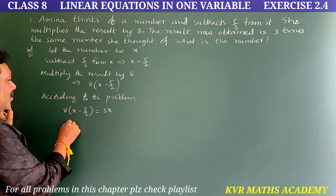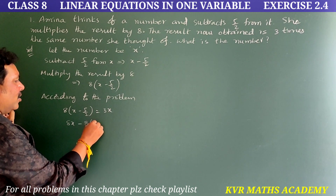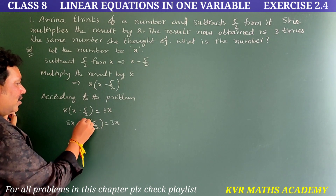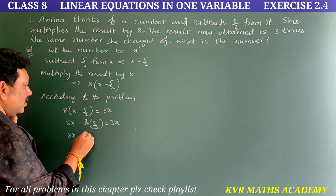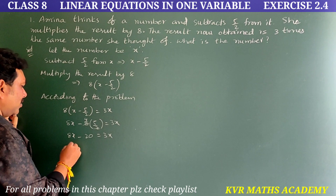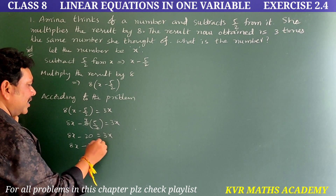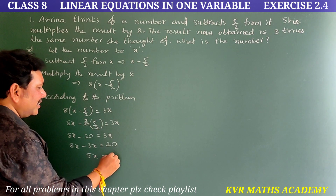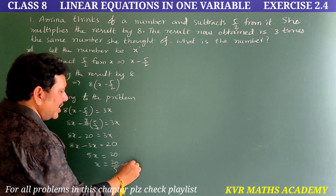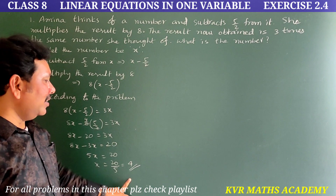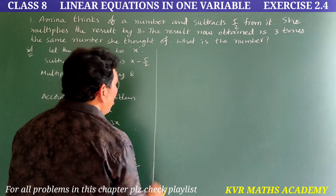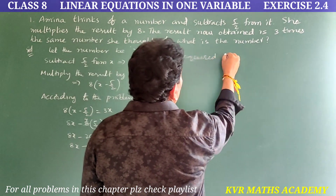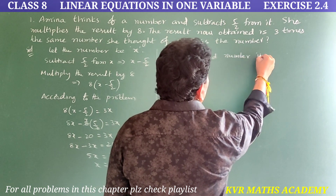Now multiply: 8X − 8 × (5/2) = 3X. The 2 cancels, giving 8X − 20 = 3X. Transfer 3X to this side: 8X − 3X = 20, so 5X = 20. Therefore X = 20/5 = 4. The required number is 4.